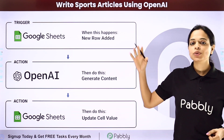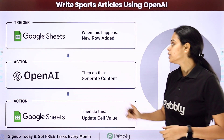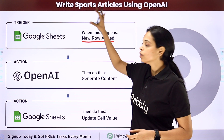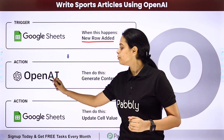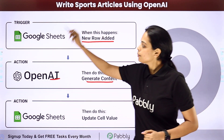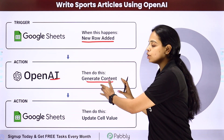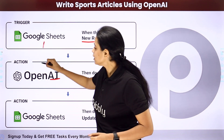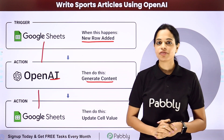Let's say that you are using a spreadsheet — here we have taken the example of a Google Sheet. Every time a new title is added as a new row, automatically with the help of OpenAI the content should be generated, and the same sheet should be updated with this content. To do this, you will have to integrate the two applications using Pabbly Connect software.